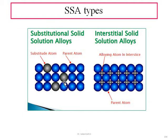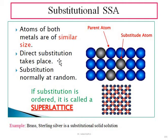For substitutional alloys, the condition is that the substitutional atom should be somewhat similar in size to the parent atom. A special arrangement is known as a super lattice — this is where the substitution is of an ordered, regular pattern. When the substitution arranges in a regular pattern, such an arrangement is known as a super lattice. Examples of substitutional alloys include brass and sterling silver.